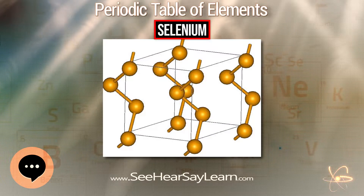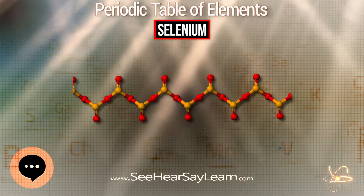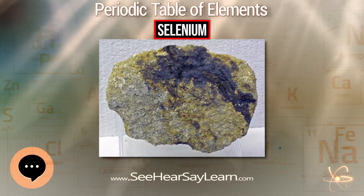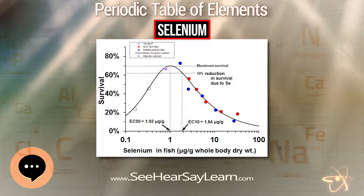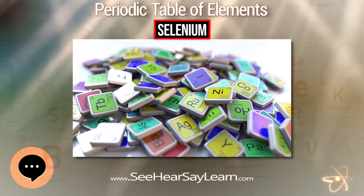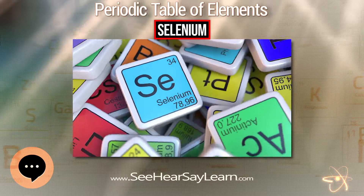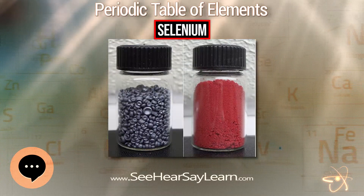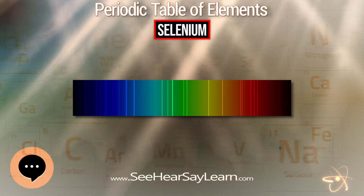In 1873, Willoughby Smith found that the electrical resistance of gray selenium was dependent on the ambient light, leading to its use as a cell for sensing light. The first commercial products using selenium were developed by Werner Siemens in the mid-1870s. The selenium cell was used in the photophone developed by Alexander Graham Bell in 1879. Selenium transmits an electric current proportional to the amount of light falling on its surface, a phenomenon used in the design of light meters and similar devices.